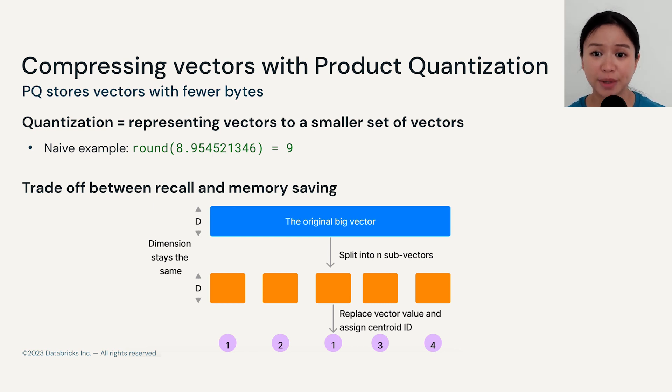Very naively speaking, quantization means that you can either round down or round up a number. But in the context of nearest neighbor search, we start with the original big vector, and then we split the big vector into segments of sub-vectors. Each sub-vector is then quantized independently and mapped to the nearest centroid.